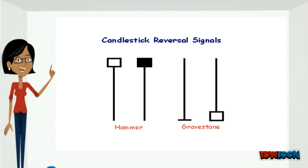A gravestone is identified by open and close near the bottom of the trading range. The candlestick is the converse of a hammer and signals reversal when it occurs after an uptrend.